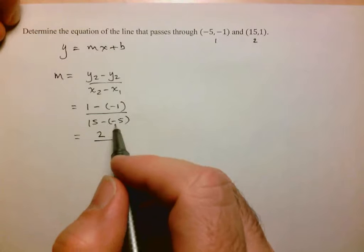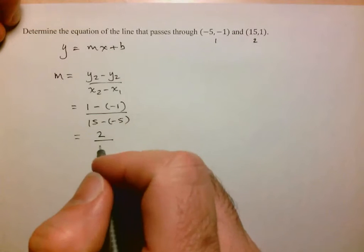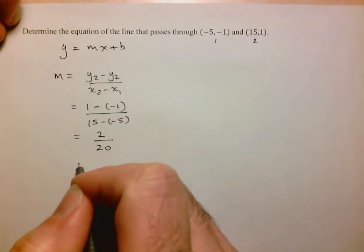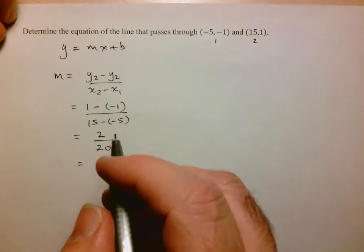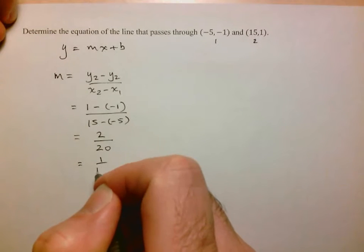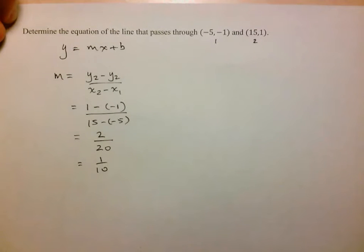And here I have 15 minus negative 5, so 15 plus 5 is 20. And of course you want to give that in reduced form, so 2 over 20 reduces to 1 over 10. So there's my slope.